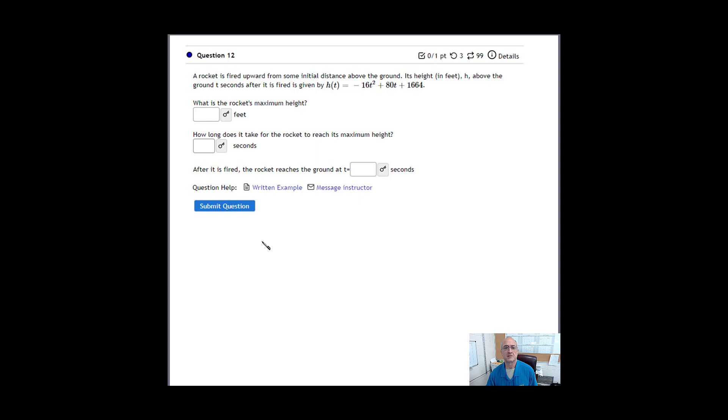The question asks what is the rocket's maximum height, how long does it take the rocket to reach that height, and after it's fired, how long does it take the rocket to reach the ground? So let's attack this in parts. First of all, let's notice that this is a quadratic equation, so that makes it a parabola. It has a negative coefficient on the t squared, so it opens downward.